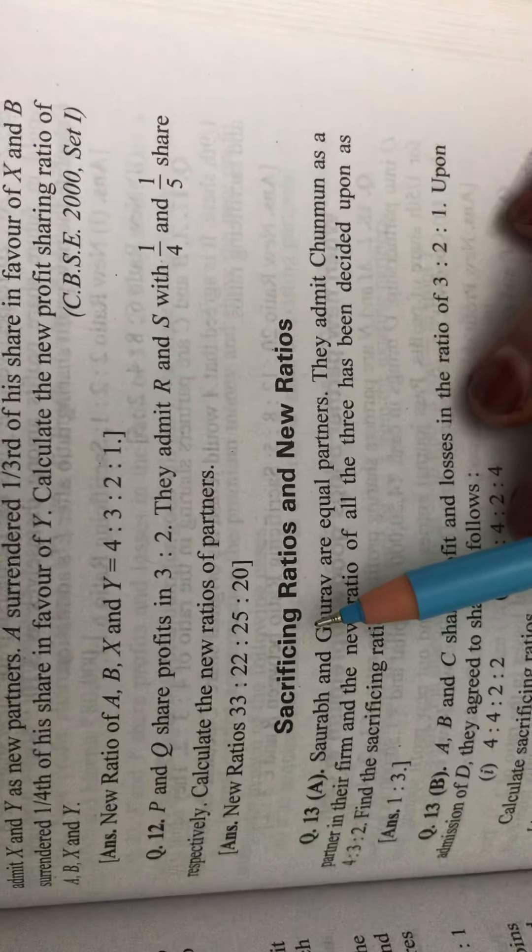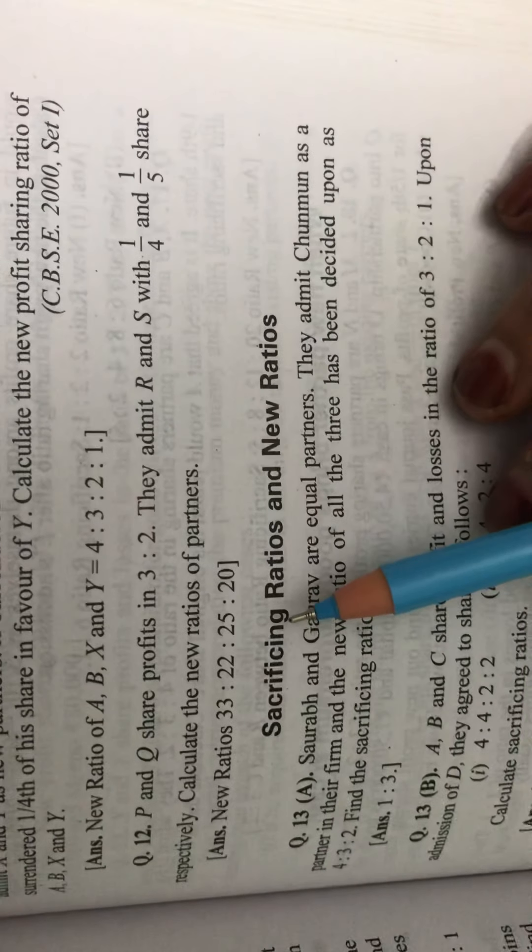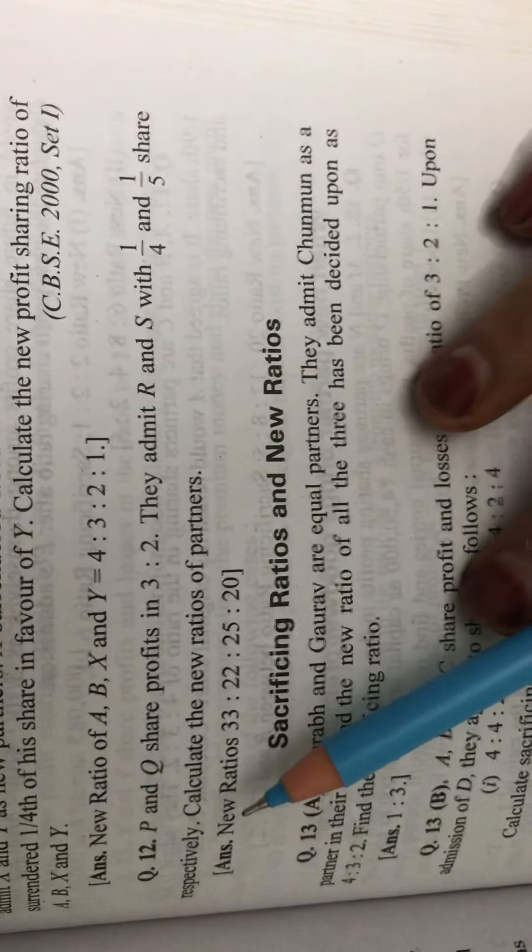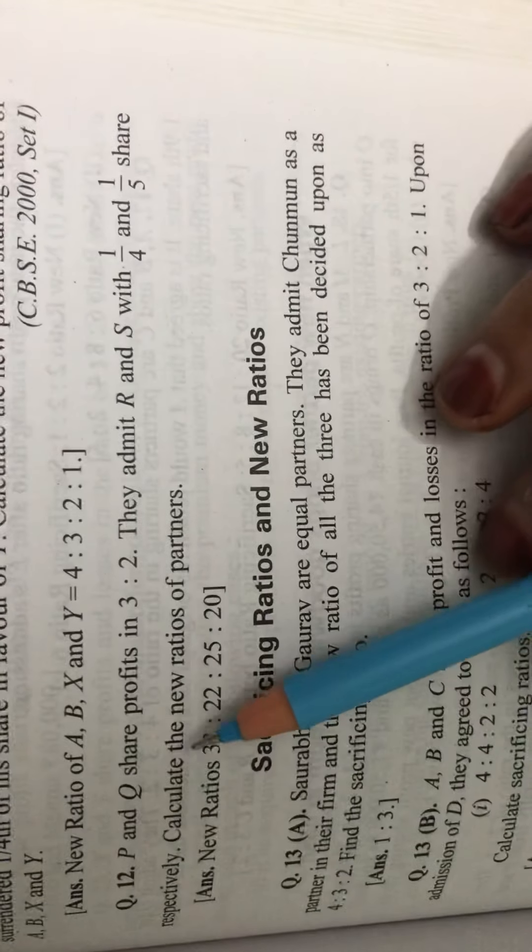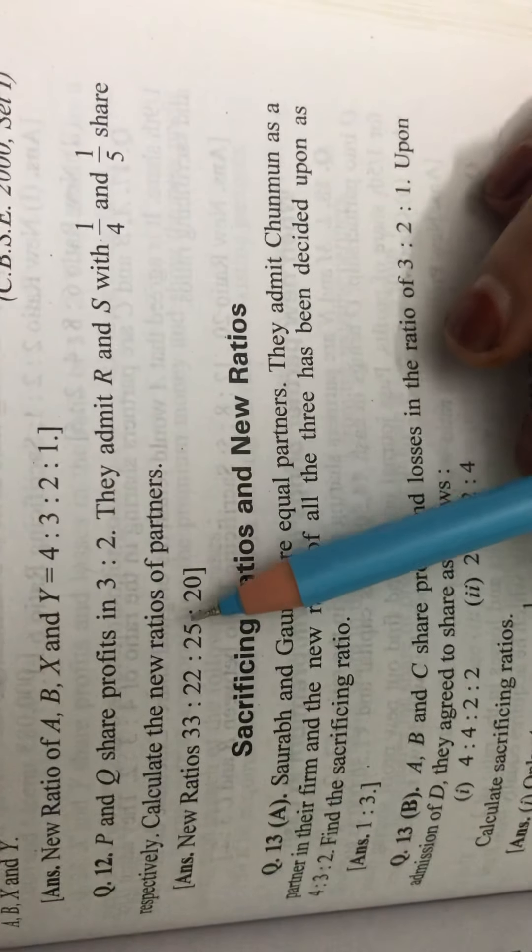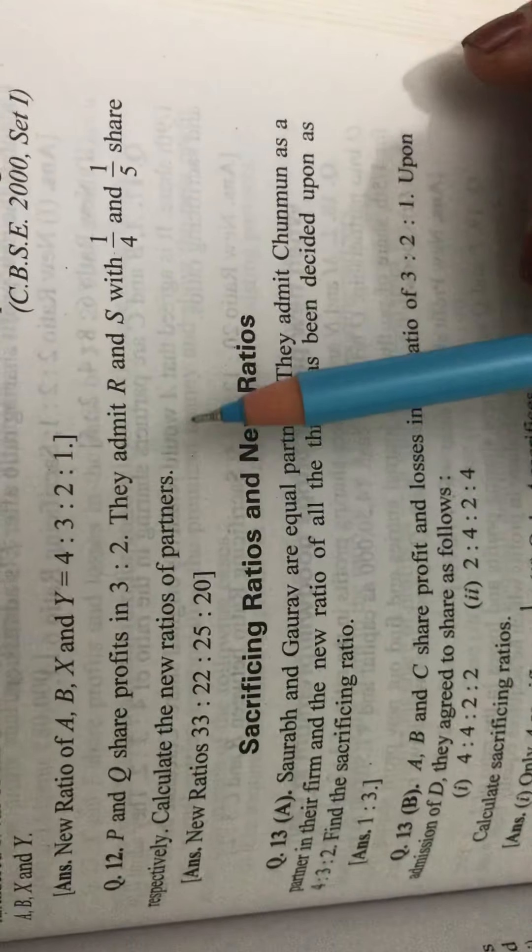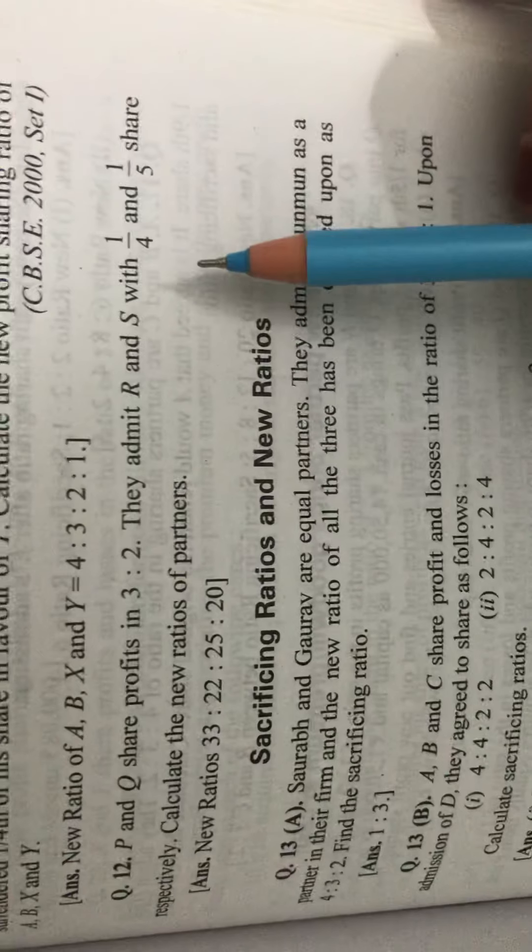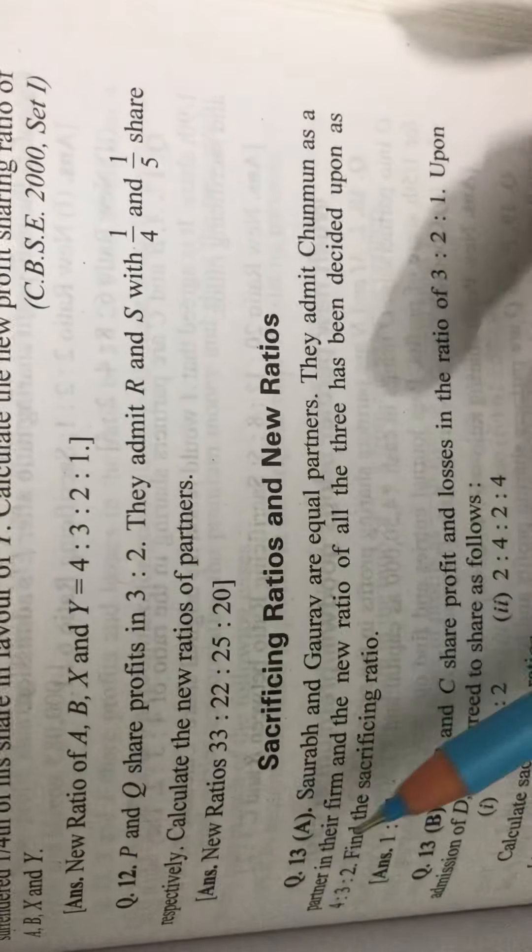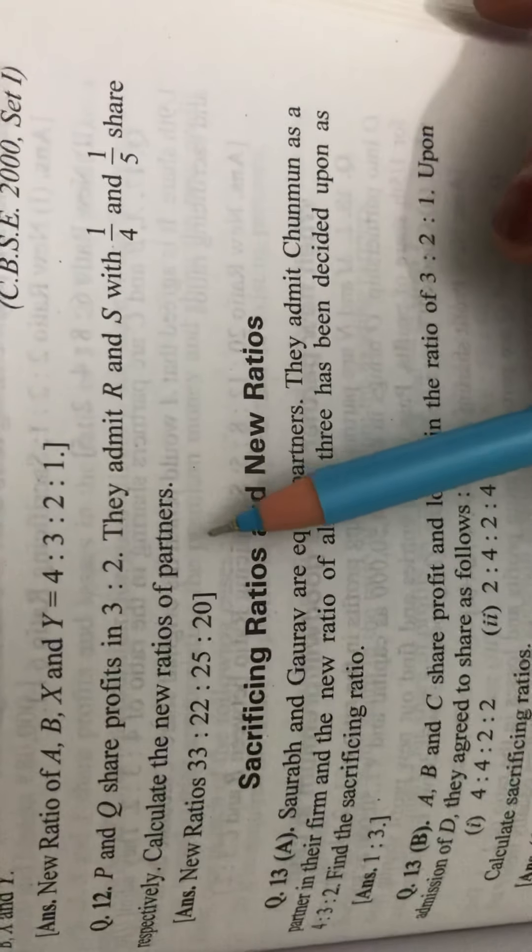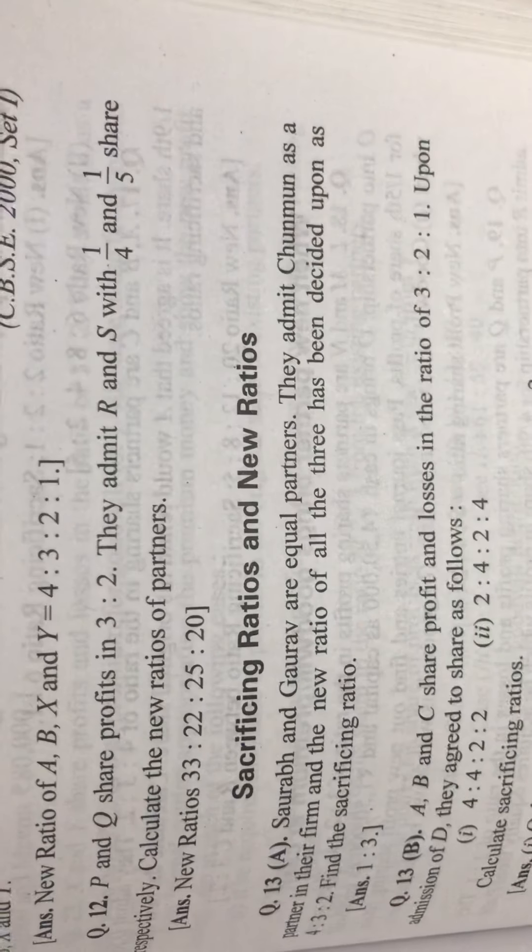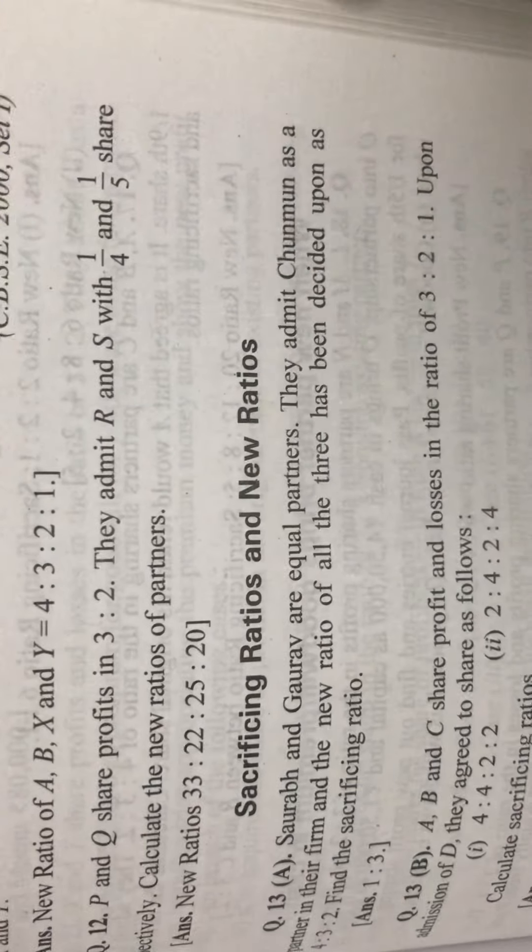Welcome to your accountancy class. Today we will do sum number 12 related to admission of a partner. P and Q share profits in 3 is to 2. They admit R and S with 1/4th and 1/5th share respectively. Calculate the new ratios of partners. So we have to calculate new profit sharing ratio because two partners are admitted.